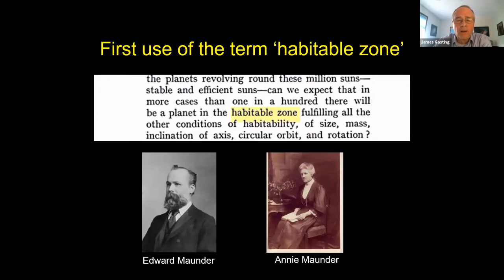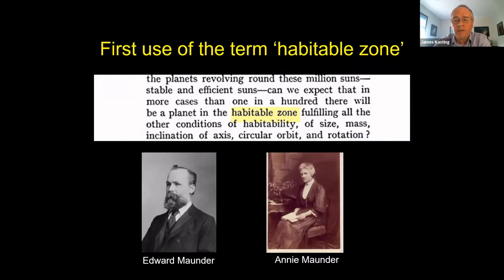Here's a picture of Maunder and his wife Annie Maunder. The quote from the book says: 'The planets revolving around these million suns — stable and efficient suns — can we expect that in more cases than one in a hundred there will be a planet in the habitable zone fulfilling all of the other conditions of habitability: of size, mass, inclination of axis, circular orbit, and rotation?' I also learned from Lorenz's paper that a lot of Maunder's work was actually done by his wife Annie, but in those days they didn't give much credit to women in science.